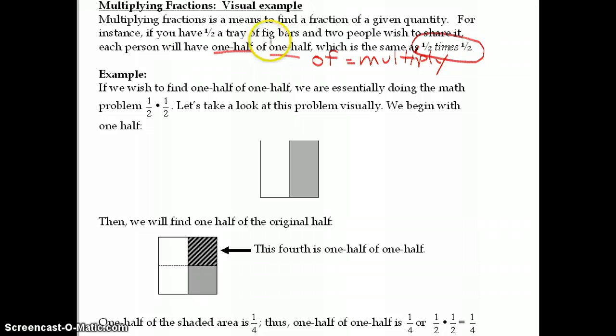For instance, say we have half a tray of fig bars. Here's our half a tray of fig bars, and two people wish to share it. We want to know how much is each person going to have? How much of the tray will each person have?